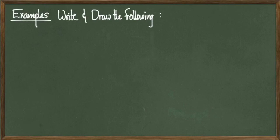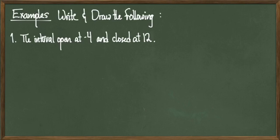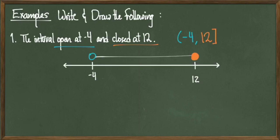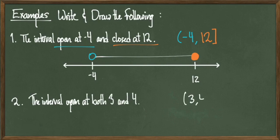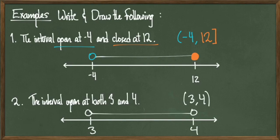In these examples, we'll write and draw the following. First, the interval that is open at negative 4 and closed at 12. Conventionally we write intervals like number lines, with smaller numbers on the left and bigger numbers on the right. Since I'm open at negative 4 and closed at 12, the interval is (-4, 12], and the number line shows an open circle over negative 4 and a filled-in circle over 12. For the interval open at both 3 and 4, I use parentheses on both ends to get (3, 4), with open circles over both 3 and 4 on the number line.